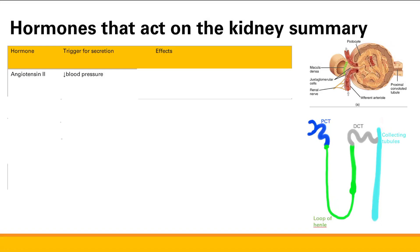We're going to talk about hormones that act on the kidney first, and then after that we're going to talk about hormones that the kidney makes. First of all, hormones that act on the kidney.